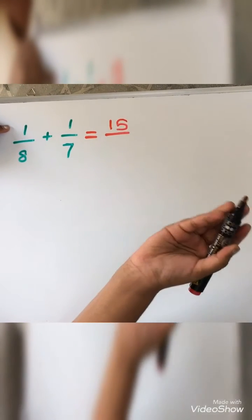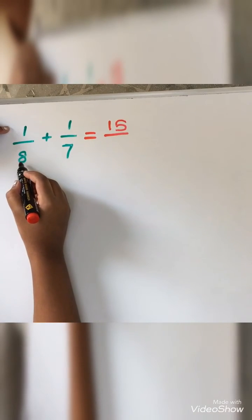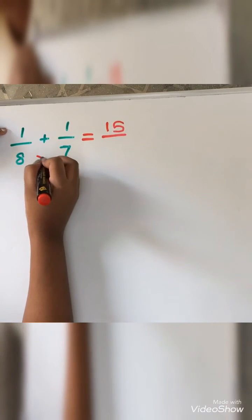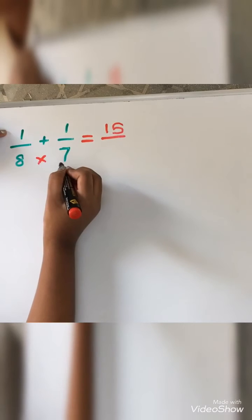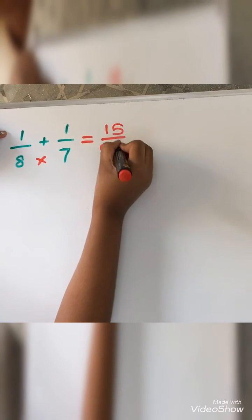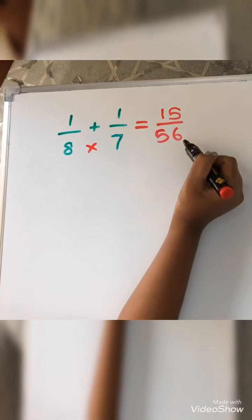And for finding the denominator, we should multiply these two numbers. 8 times 7 equals 56. The answer is 15 by 56.